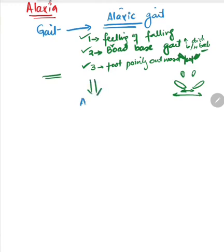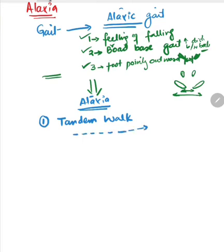Now what next will you do? Two things. Number one: tandem walk. Ask him to walk in a straight line. You will see that he has difficulty walking in a straight line; he cannot walk in a straight line.